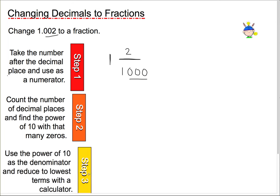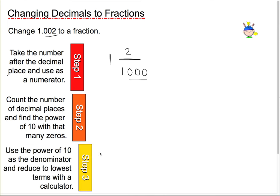And lastly, step 3 says, use the power of 10 as a denominator and reduce to lowest terms with a calculator. So, 2 over 1,000, we need something that goes into both 2 and 1,000 to reduce to lowest terms.